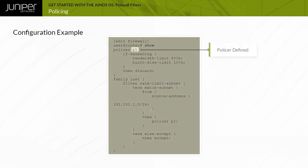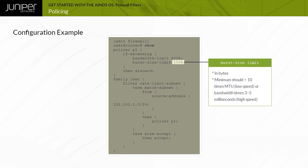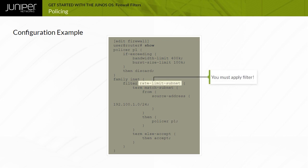In this example, you define a policer named P1 that discards traffic exceeding an average bandwidth of 400 kilobits per second and a burst size limit of 100 kilobytes. Once defined, you can call this policer from any firewall filter. By default, Junos OS treats each invocation of the policer separately and tracks statistics separately for each term that references it. The filter rate limit subnet polices traffic from the specified subnet, discarding it if limits are exceeded or accepting it if they are not.